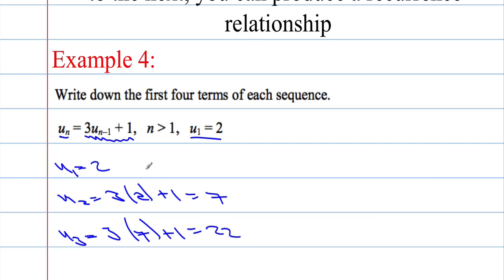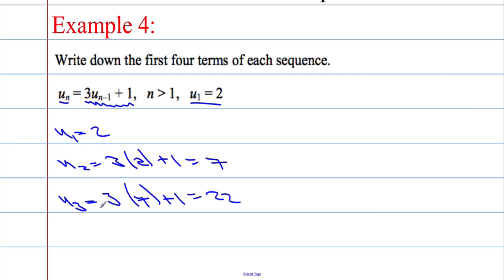And then one more. The fourth term, u(4), is going to be three times the previous term plus one. Three times 22 is 66, and 66 plus 1 is 67. Hence the first four terms of the sequence are written down: 2, 7, 22, 67.